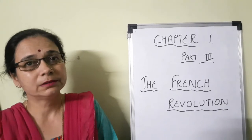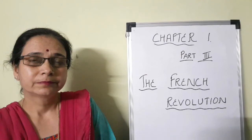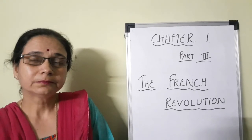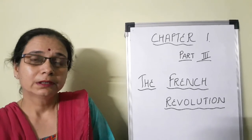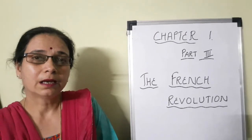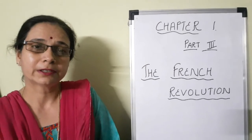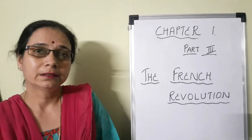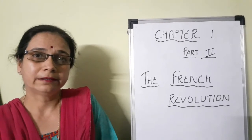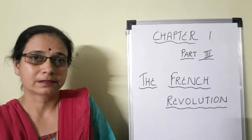Today, children, we will start with the third part. In this part, we will study how the national assembly came into effect and what were the works done by the national assembly to gain freedom and human rights for the people of France.